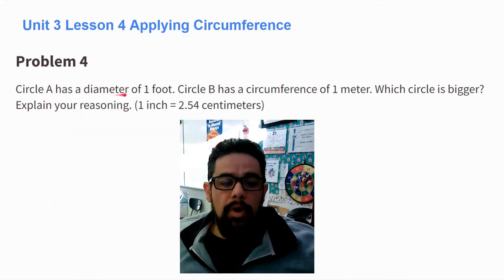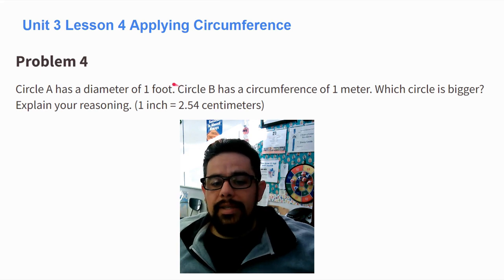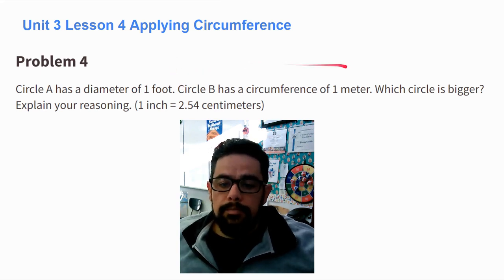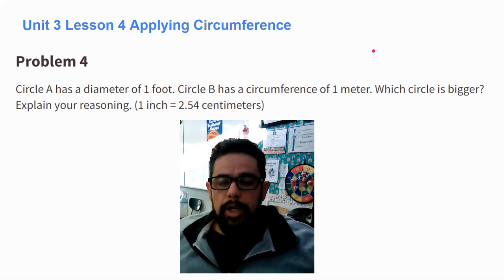Circle A has a diameter of 1 foot. Circle B has a circumference of 1 meter. Which circle is bigger? Explain your reasoning.